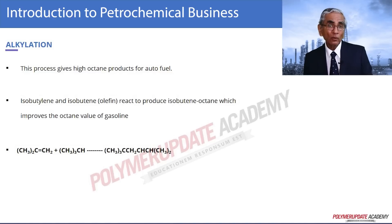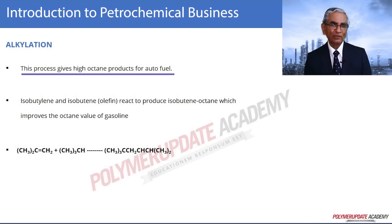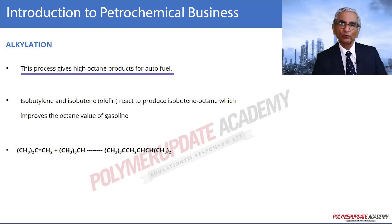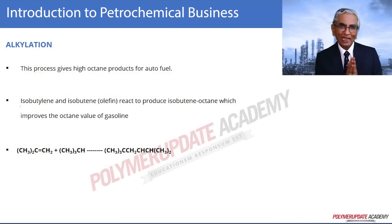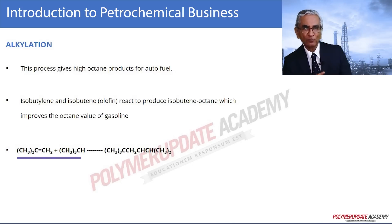Alkylation gives you a high octane number for your product. If the gasoline used has a poor octane number, it does not fire properly. In alkylation, isobutylene and isobutane react together to give a compound with a very high octane number, called isooctane. That reaction has been shown here. So far we have seen the refining of fractions 1 through 5.